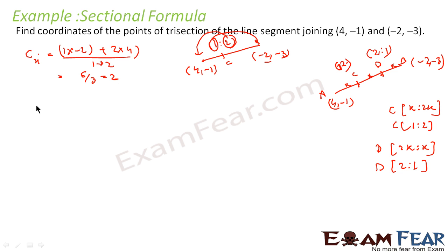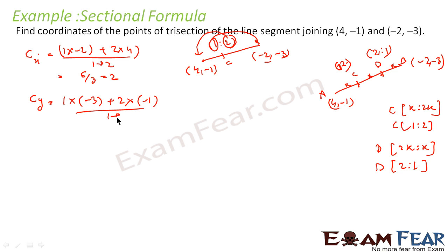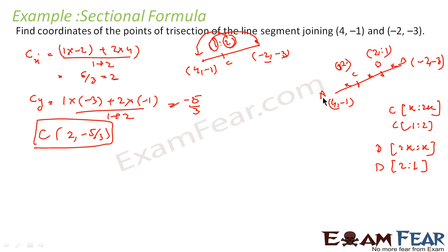So C's x-coordinate is 2. Similarly, C's y-coordinate: 1 into (-3) plus 2 into (-1), divided by 1 plus 2. This becomes (-3 - 2) / 3, that is -5/3. So we got the y-component.